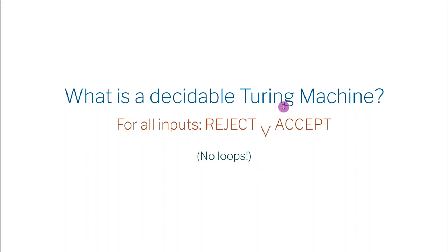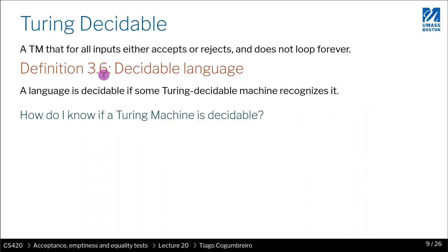A decidable Turing machine is one that terminates for all inputs - it either rejects or accepts the input. That is definition 3.6 from the book. The decidable language is just a language that has some Turing machine that recognizes it, and that Turing machine is decidable. Very simple definition.